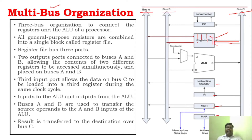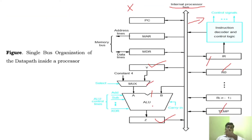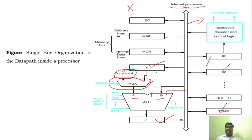In single bus organization's ALU: input B is directly connected to the internal bus, and for input A there is a multiplexer that selects either a constant or Y. The content from Y reaches A, the ALU performs the operation (add, subtract), sends the result to Z, then to the internal bus, and from there to any particular register — many steps involved.